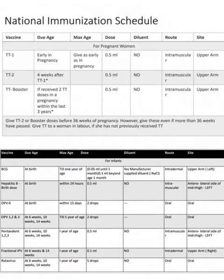As an example, let's review BCG: it is given at birth, can be given up to a maximum of one year of age, dose is 0.1 ml given beyond one month, route is intradermal because it is 0.1 ml, and it is given on the left side.